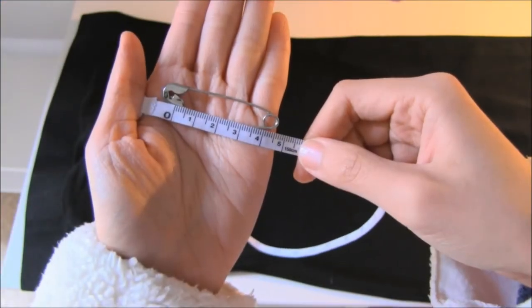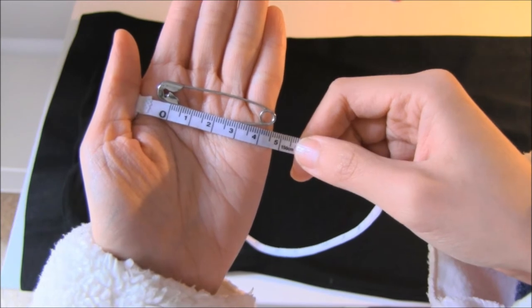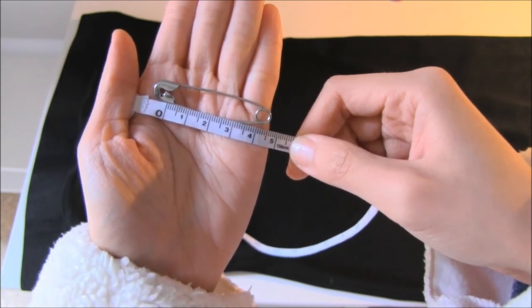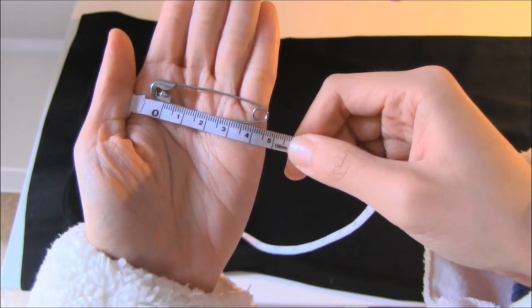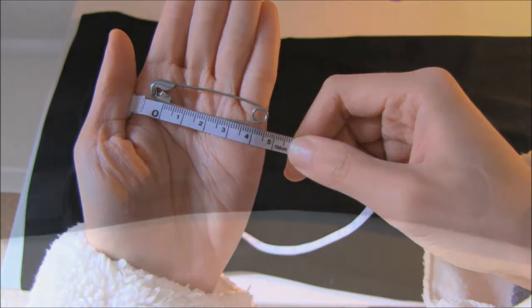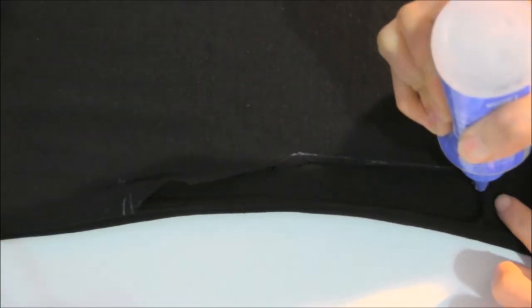Then measure the inner length of the safety pin. Here it is about four centimeters. So the width of my cutout would be about 3.5 centimeters, leaving some material on the edge to glue in. Then make the cutout.